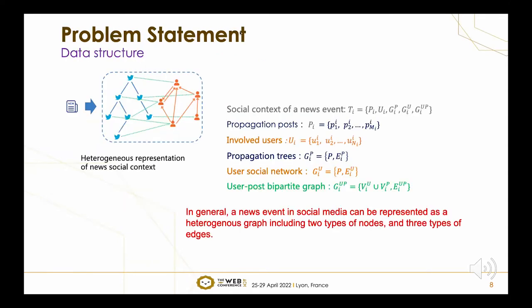Now let me introduce the data structure of a news event. In general, a news event in social media can be represented as a heterogeneous graph including two types of nodes and three types of edges. It includes the propagation posts, the involved users, the propagation tweets, the user social network, and the user-post bipartite graph.